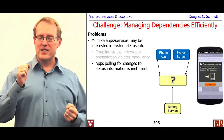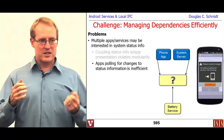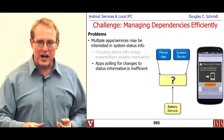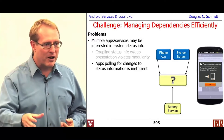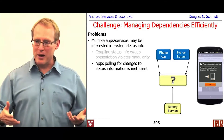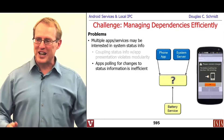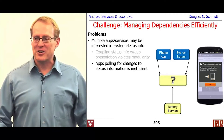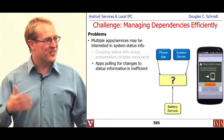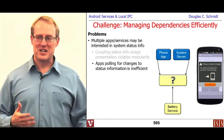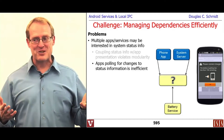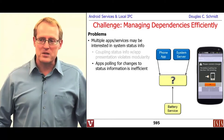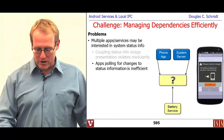Likewise, having the app continually ask a service, "Are you running low on battery?" over and over — well, pretty soon you'll run low on battery because you're spending all your time asking whether you're low on battery. It's like having your kids say, "Are we there yet? Are we there yet?" — it's not making it go any faster, it's just going to be a lot more painful. So a polling-based model isn't really the right way to go either.